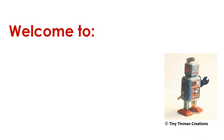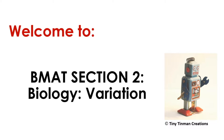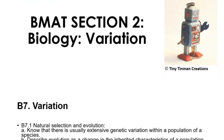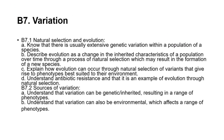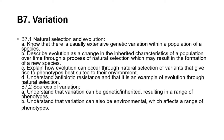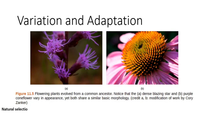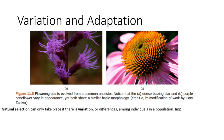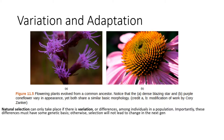Welcome to section 2: biology variation. Here are the learning objectives — make sure to spend some time during your study going over them. Natural selection can only take place if there is variation, or differences among individuals in a population. Importantly, these differences must have some genetic basis, otherwise selection will not lead to change in the next generation.